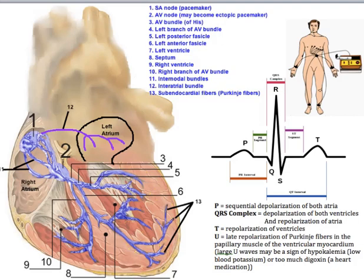The impulse initiated at the SA node first spreads across two fibers. One is the interatrial fiber — labeled number 12 — which transmits the impulse from the SA node to the left atrium. The interatrial fiber is easy to remember: 'inter' meaning between, so between the atria.